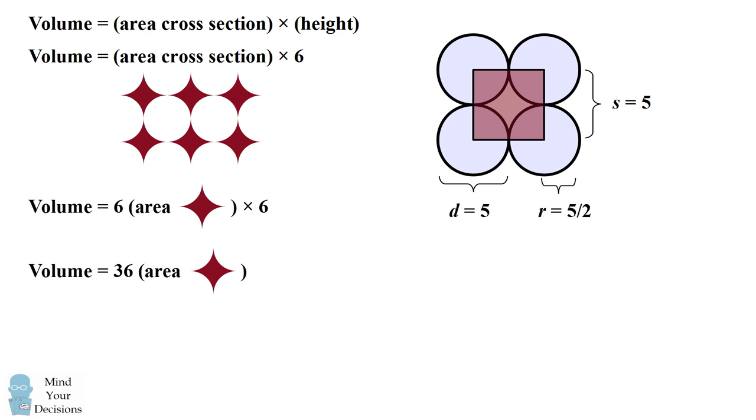The area between the gaps is equal to the area of this square minus the area of 4 quarter circles. So we can write this as the area of the gap is equal to the area of the square minus the area of 4 quarter circles.